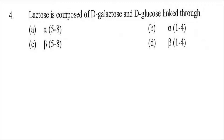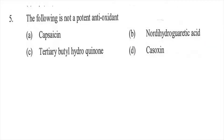The bond options are alpha 5-8, alpha 1-4, beta 5-8, or option D beta 1-4. The right answer is D, beta 1-4 glycosidic bond. Question five: Which of the following is not a potent antioxidant — option A capsaicin, option B nordihydroguaiaretic acid, option C tertiary butyl hydroquinone, or option D casoxin?